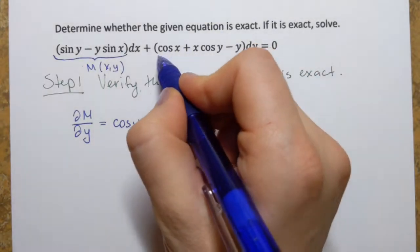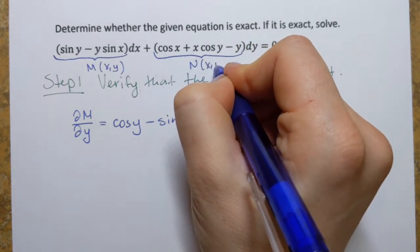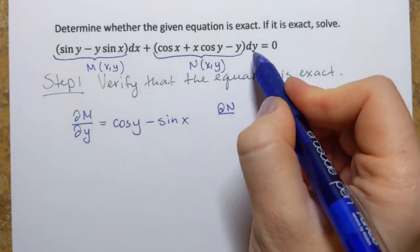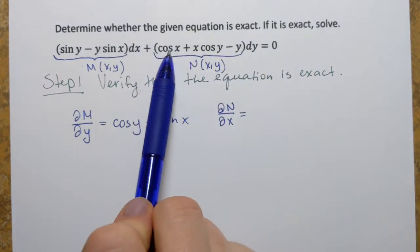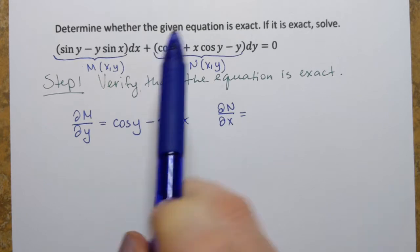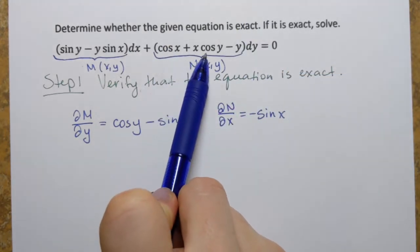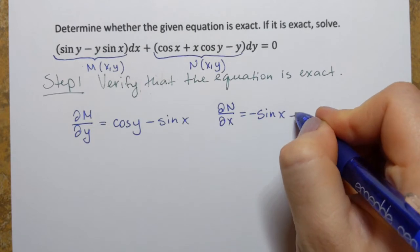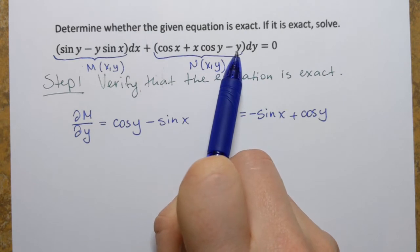Now I repeat that with the function next to dy, which we call N of xy, and take its partial derivative with respect to x, treating x as the variable. The derivative of cosine of x is negative sine of x. For x cosine of y: x is the variable, cosine of y is the constant, so I drop the variable and keep the coefficient, giving plus cosine of y. And the term minus y is constant with respect to x, so its derivative is zero.